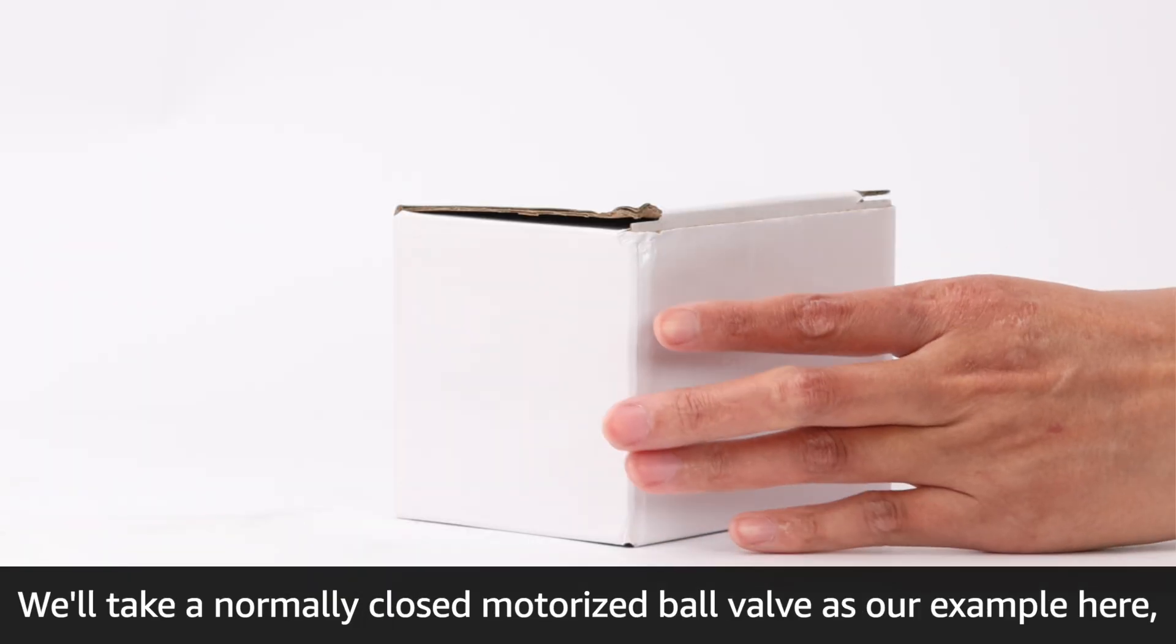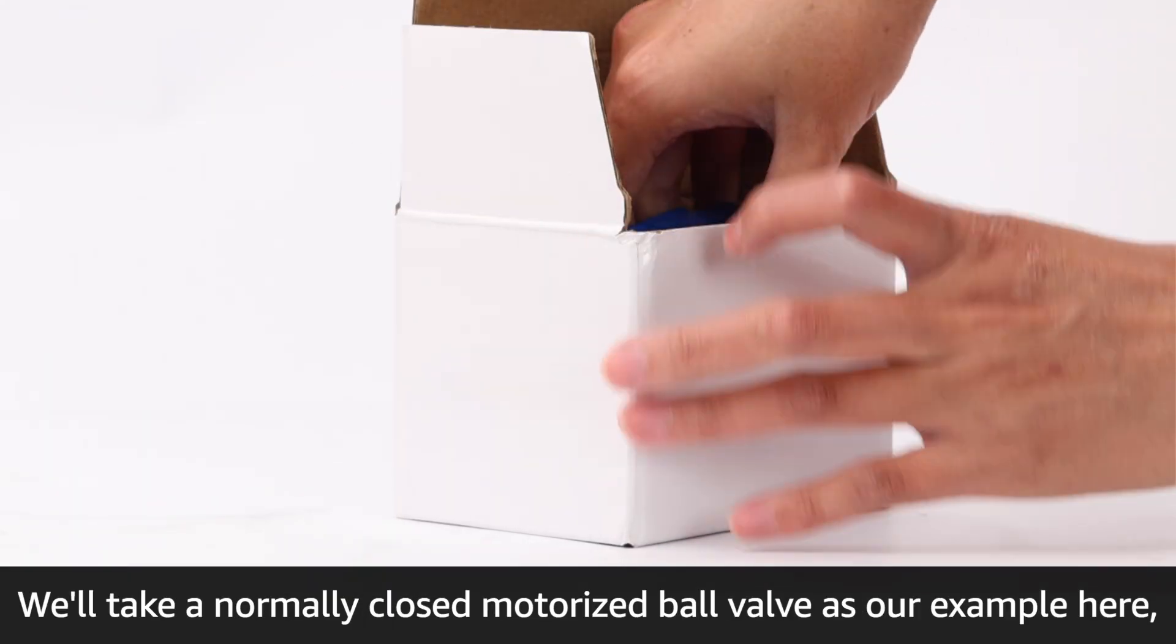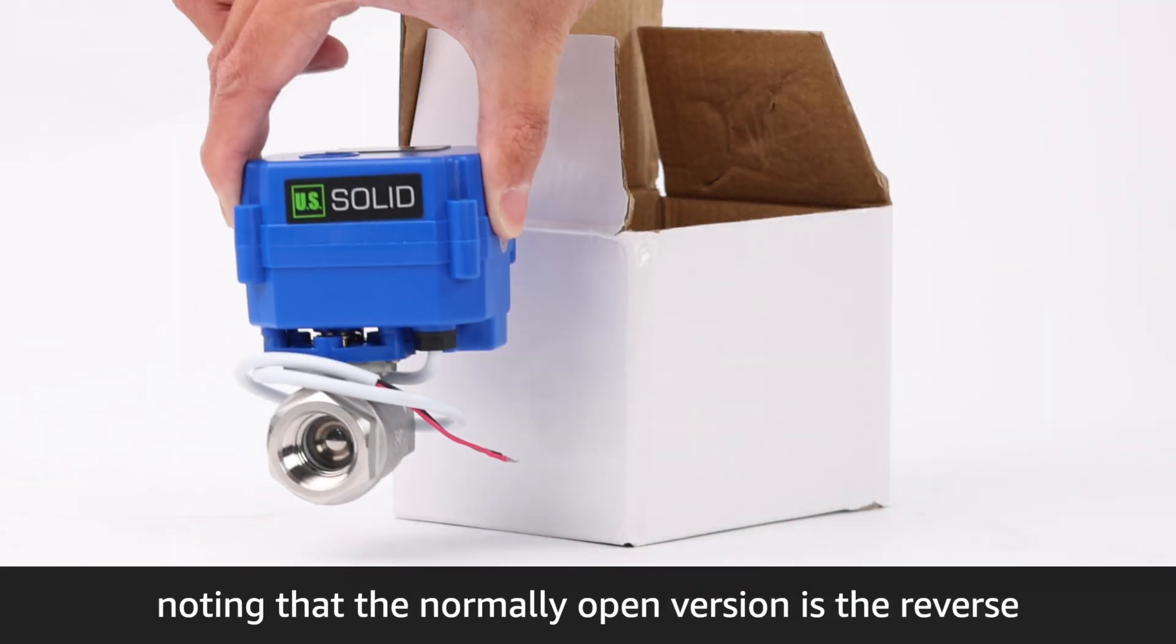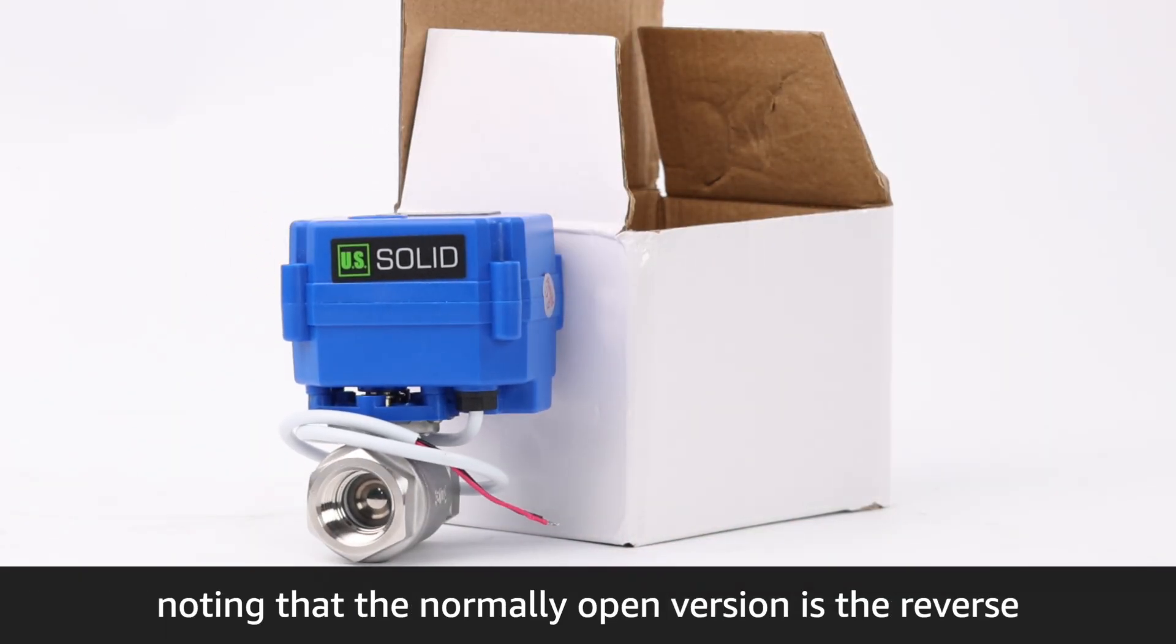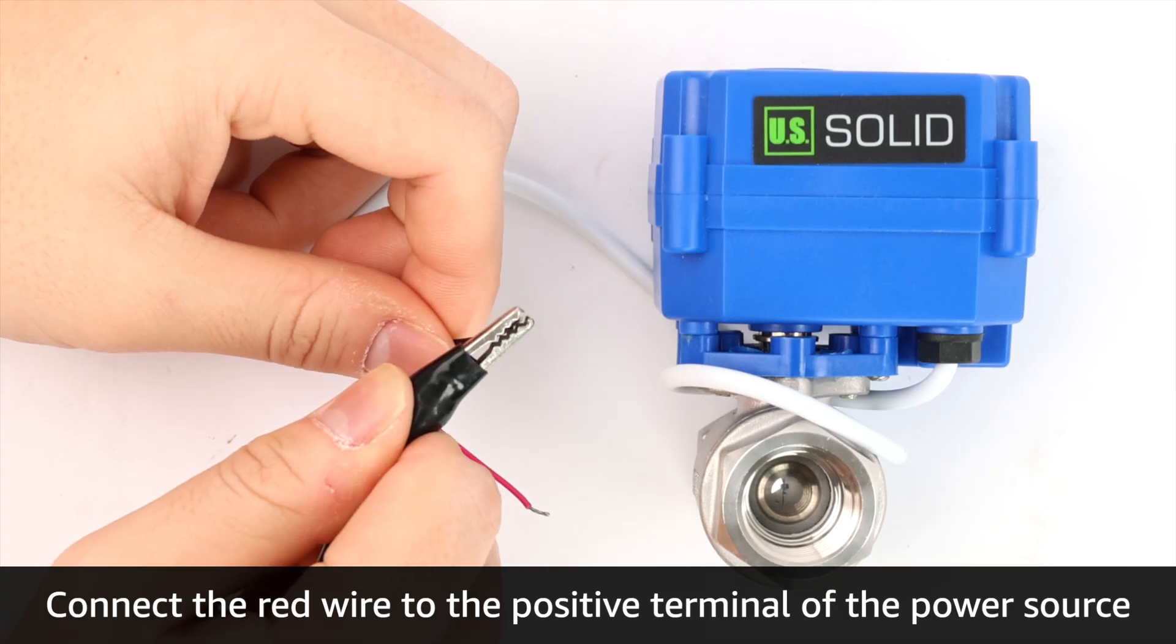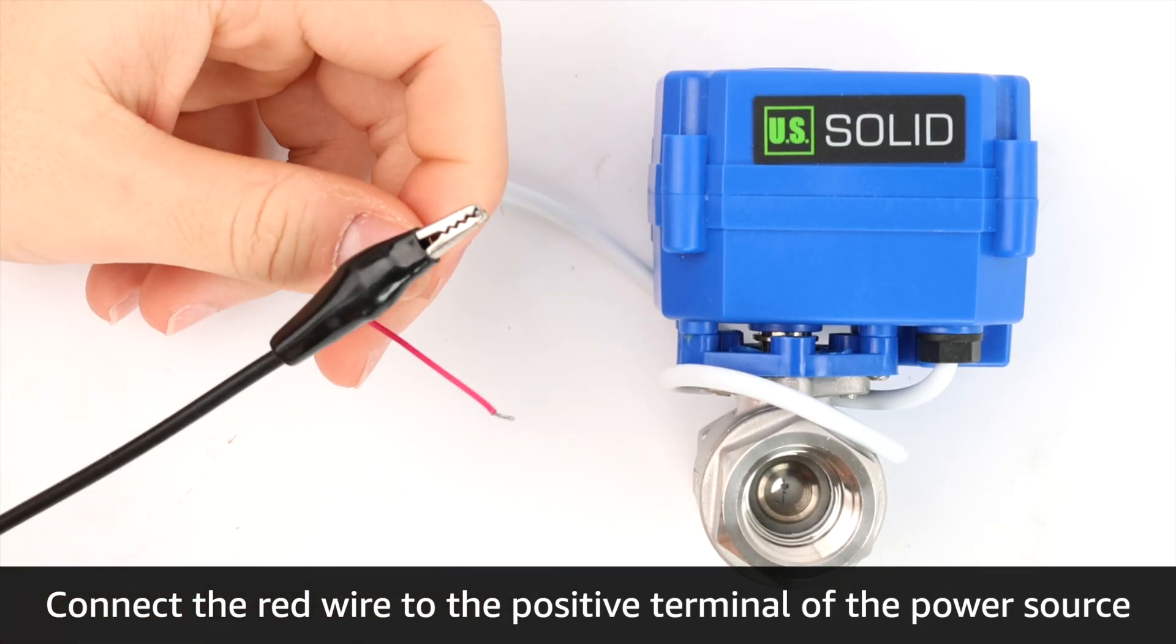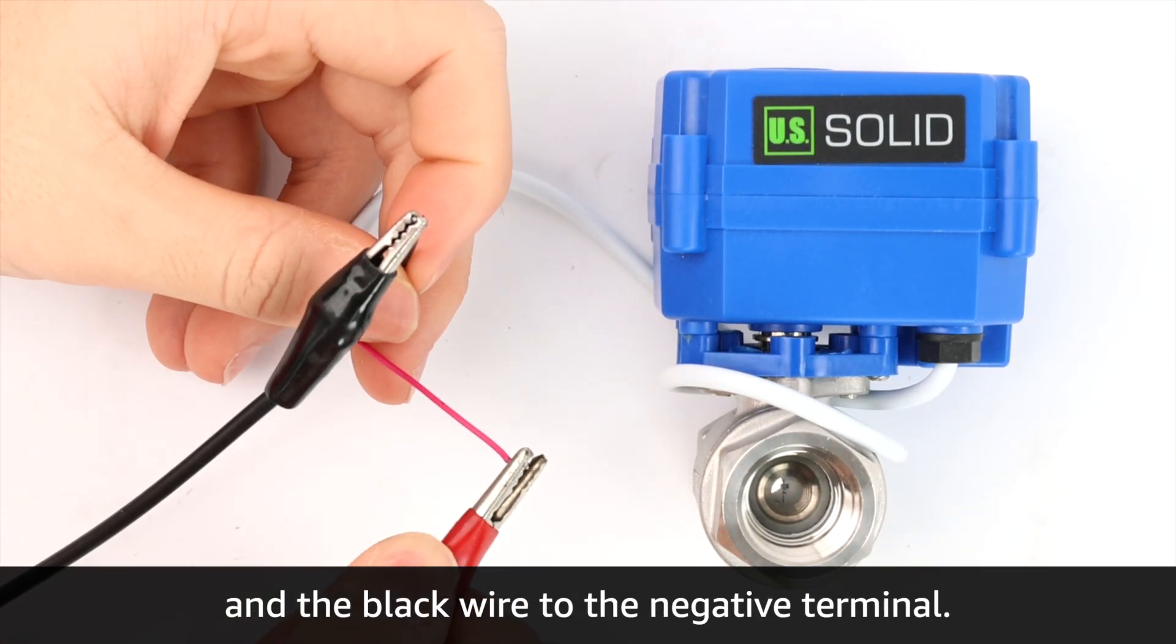We will take normally closed motorized ball valve as our example here, noting that the normally open version is the reverse, connecting the red wire to the positive terminal of the power source and the black wire to the negative terminal.